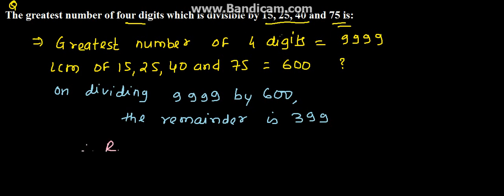Therefore we can say that the required number is equal to 9999 minus the remainder, 399. So this comes to 9600.